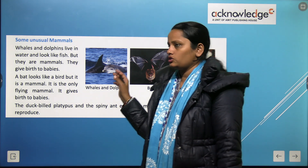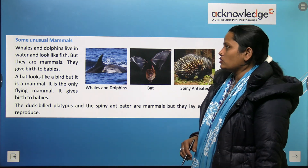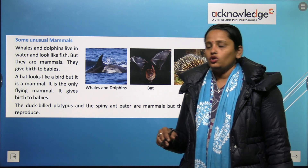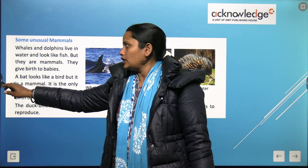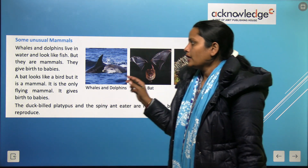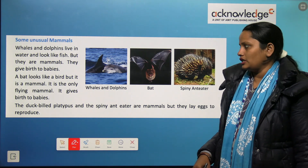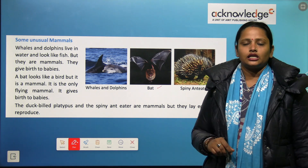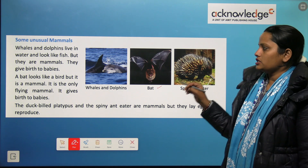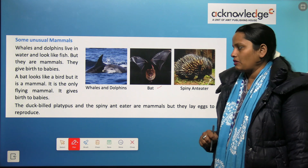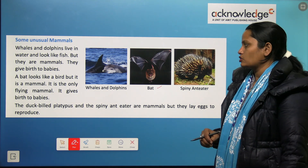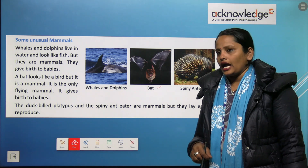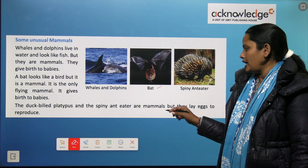Here are some unusual mammals. Whales and dolphins live in water and look like fish, but they give birth to babies. The duck-billed platypus and the spiny anteater are mammals, but they lay eggs to reproduce.